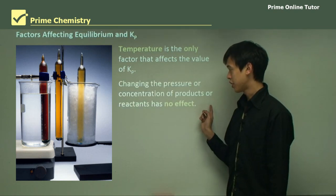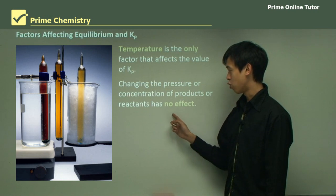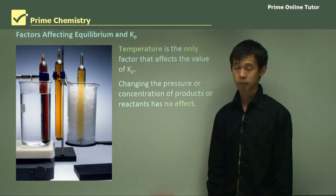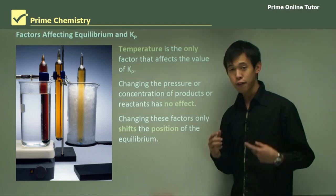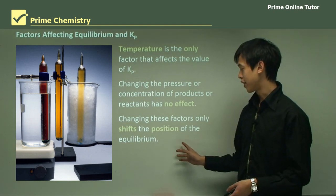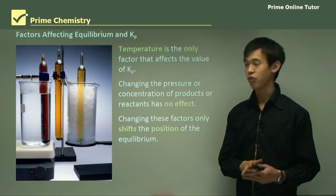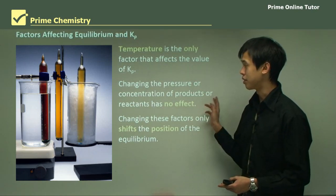So the changing in pressure or concentration of products and reactants has no effect on Kp. Now, the difference that they have is that they only affect the position of equilibrium, so where the equilibrium sits rather than the equilibrium constant itself.